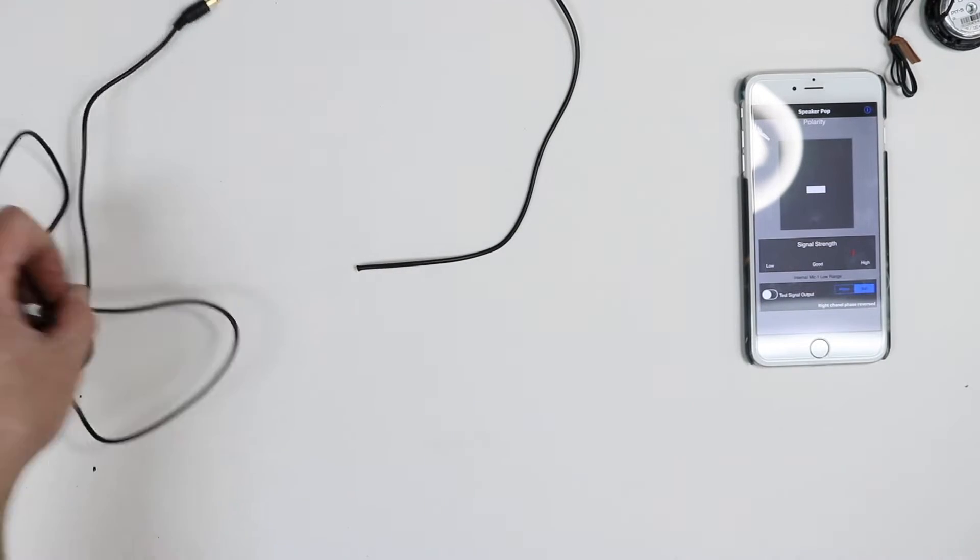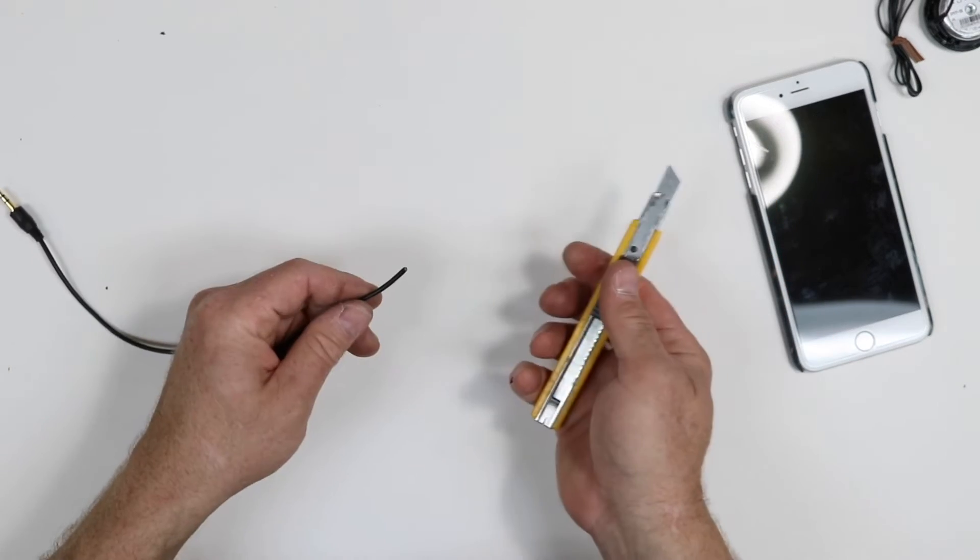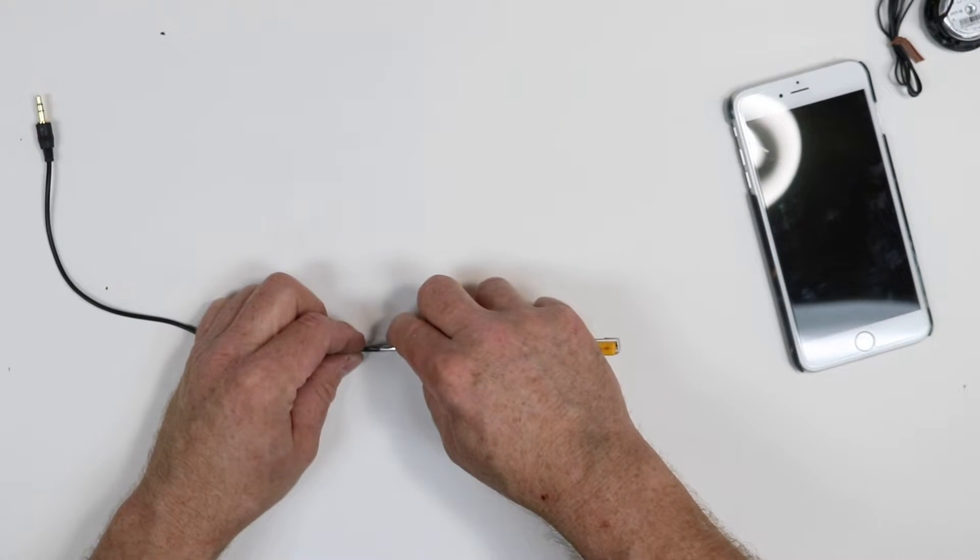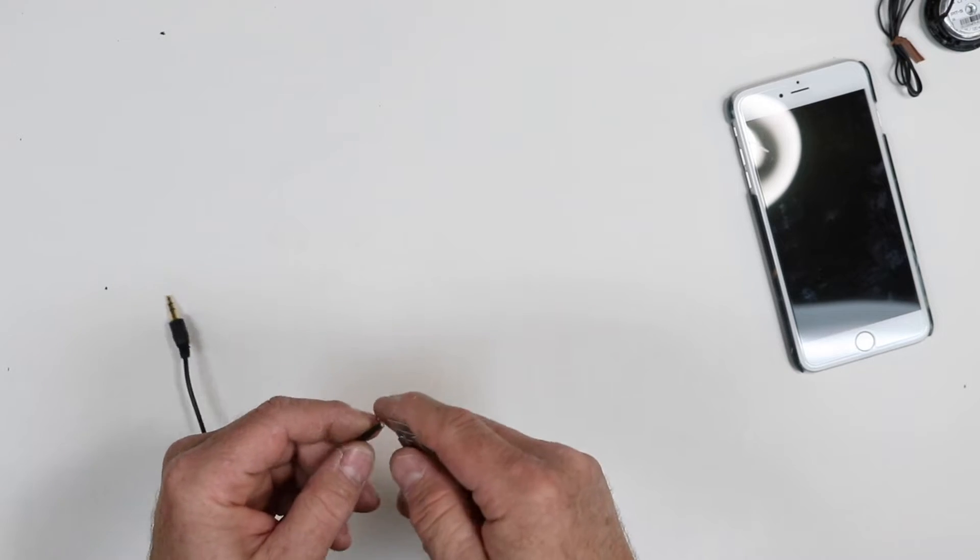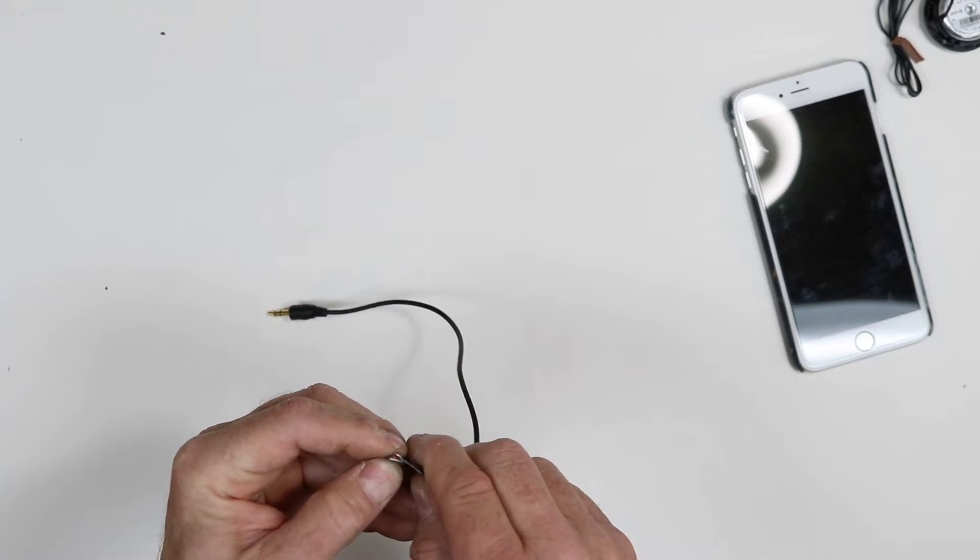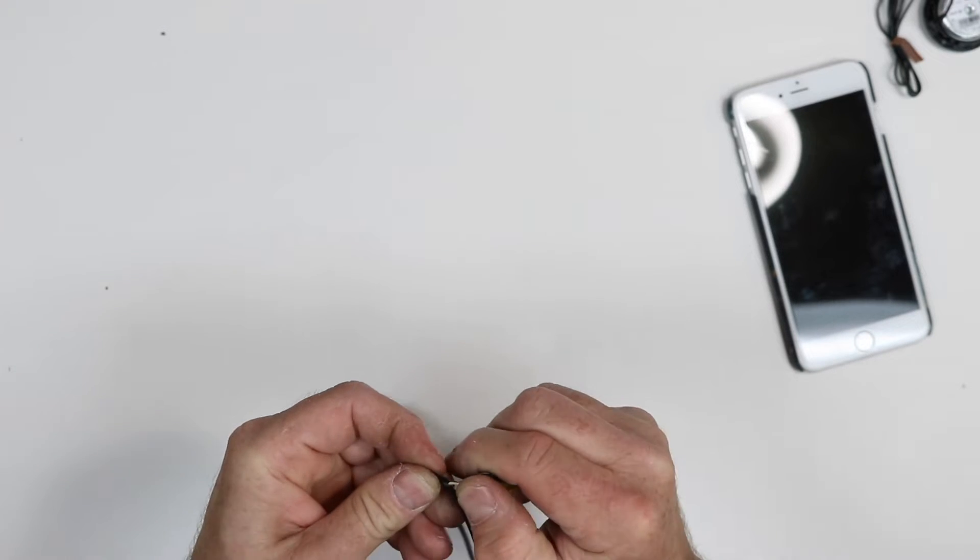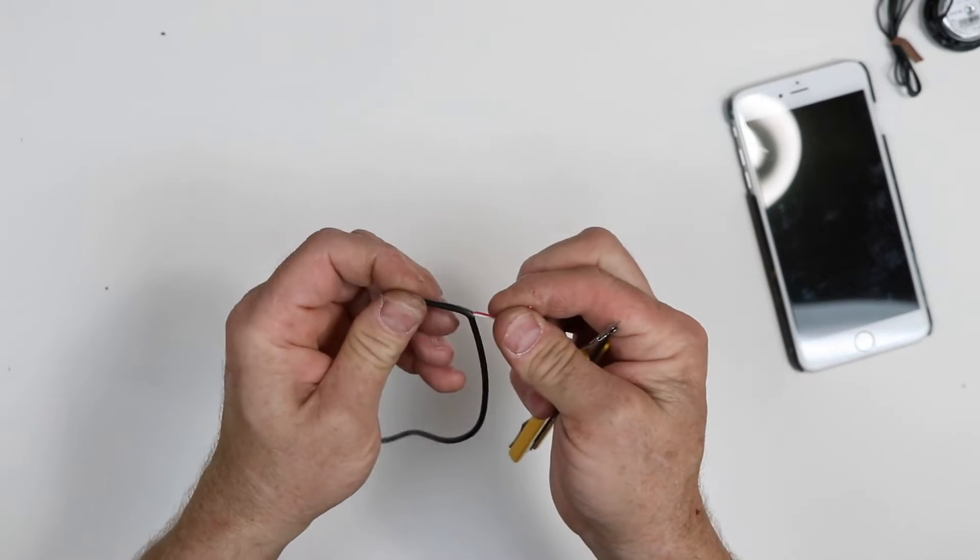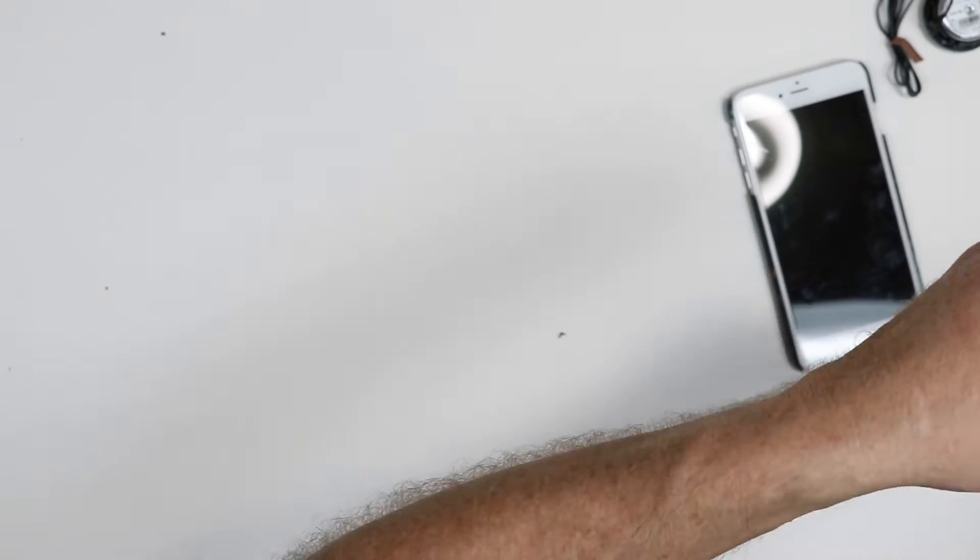Oh, this is going to be fun. Oh, yeah, we're going to cut it in half. Wasn't that fun? All right, so now that we've cut it in half, we want to go ahead and we want to strip back some of the cable. We're going to go ahead and pull it out.